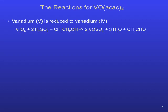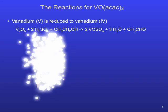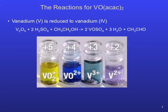Vanadium is added to the reaction mixture using the compound vanadium pentoxide. Vanadium is reduced from +5 to +4 by ethanol in the presence of sulfuric acid, with the primary product being VOSO₄, or vanadyl sulfate, formed in this reaction. The oxidation state of vanadium greatly affects its color, as shown below in separate vials containing vanadium in different oxidation states.